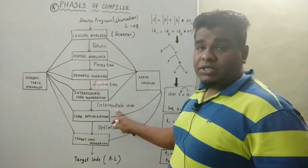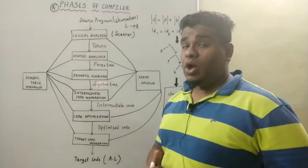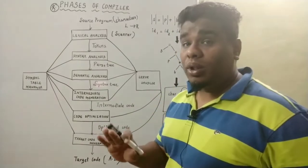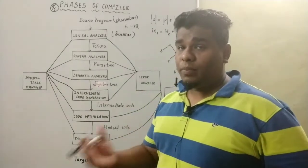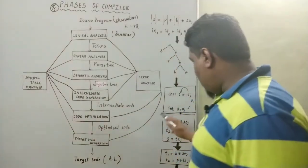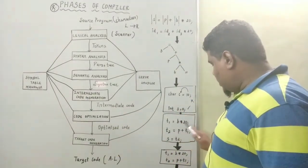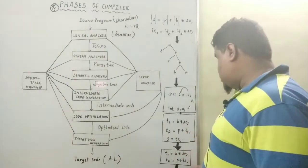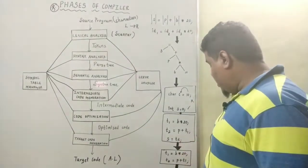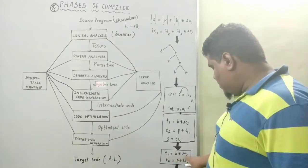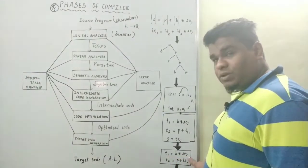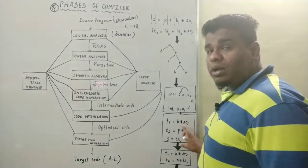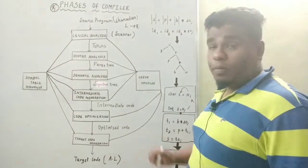Now we move on to code optimization, which is a very important part. As the name implies, optimization means producing the best result — it will remove all the unwanted code in the program. For example, given t1 is equal to b star 20, t2 is equal to p plus t1, and s is equal to t2, we can eliminate one variable. We only need t1 is equal to b star 20 and t2 is equal to p plus t1 — s is not needed. So the unwanted code is removed in code optimization.